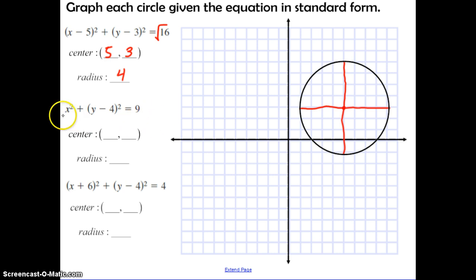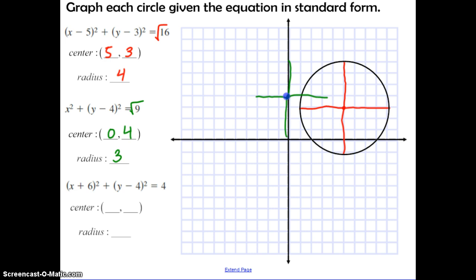Let's do one more together. X squared all by itself — there's no H, so it's 0. The Y coordinate minus 4 tells us it's positive 4. Taking the square root of the radius squared gives a radius of 3. So we plot the center: X coordinate 0, Y coordinate positive 4 — counting 1, 2, 3, 4. Our radius is 3, so we go to the right 3, up 3, to the left 3, and down 3. Then sketch your circle.